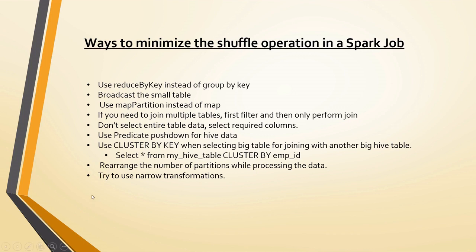Also, tune the number of partitions while processing data. By default, Spark uses 200 partitions, which is too many for a small amount of data — try to reduce it using the repartition function. If you have more data, you can increase it. Check the amount of data you are processing and set the repartition count programmatically or through the spark-submit command. Additionally, try to use narrow transformations — like map, filter, and union — since these are processed within a single stage with no shuffle, which improves performance.